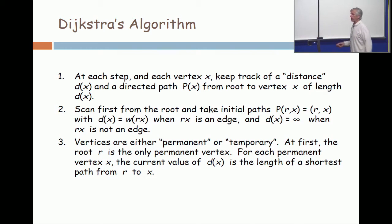Vertices are declared to be either permanent or temporary. And the only one that starts out as being permanent is the root. And the optimal path from the root to the root is don't go anywhere, don't pay anything. So distance from the root to itself is zero.